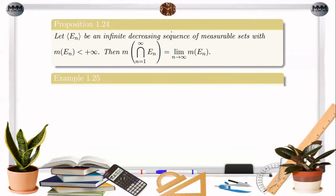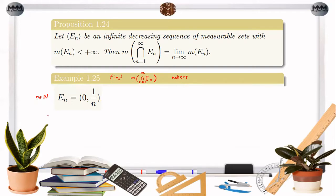Let's have an example using this proposition. We are going to find the Lebesgue measure of the intersection of E sub n, where n is from 1 to infinity, where our E sub n is the open interval from 0 to 1 over n, for n from 1 to infinity — that is, n is a natural number. First, we will satisfy the conditions of this proposition before we can find the Lebesgue measure of the intersection of E sub n.